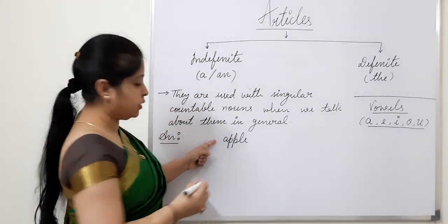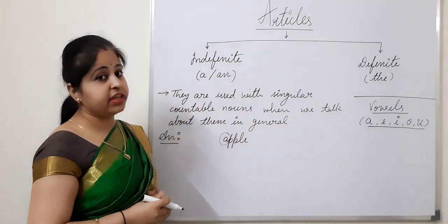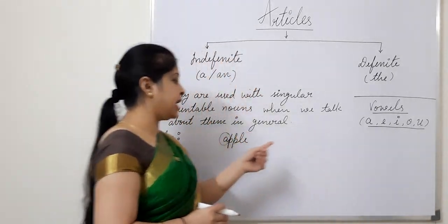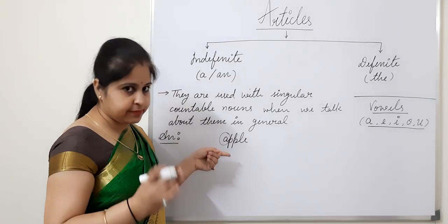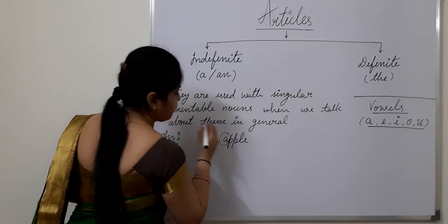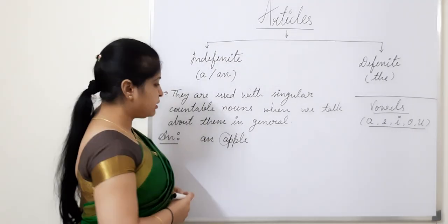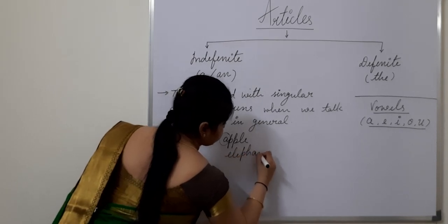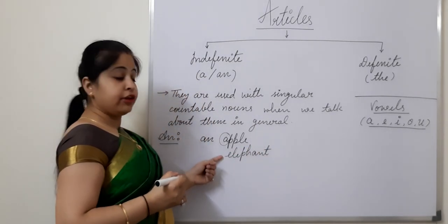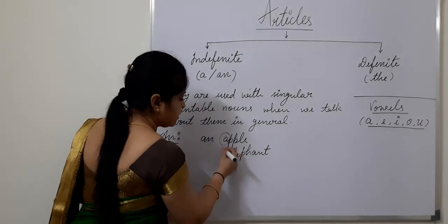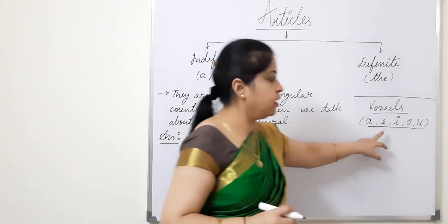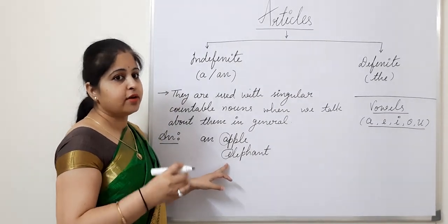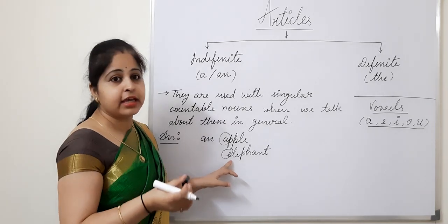'Apple' begins with a vowel and has the sound of the vowel 'A' itself. So we will be putting 'an' before it. Similarly, 'elephant' — elephant is beginning with E, which is a vowel, and has the vowel sound of E. Elephant.